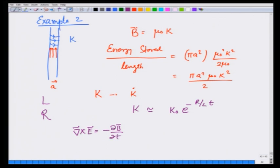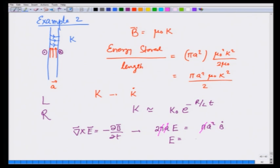The field will try to oppose the change, so it will try to sustain the field in the same direction, and therefore the induced electric field goes in on the right side of the solenoid and comes out on the left side. Applying Stokes' theorem: 2πa · E at the surface equals πa² · (−Ḃ). Canceling terms, E = aḂ/2 = (aμ₀/2) k̇ — that is the electric field going in at the surface.